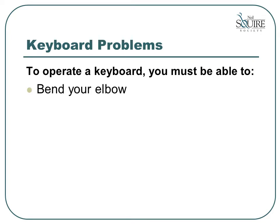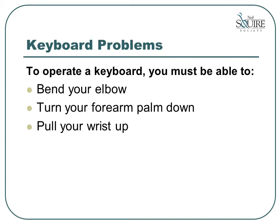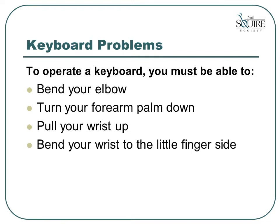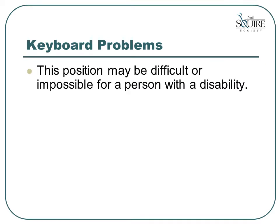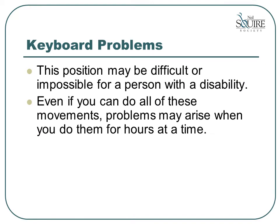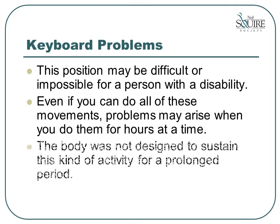First, you must be able to bend your elbow. Then, you must be able to turn your forearm so that your palm is facing down. Next, you must be able to pull up on your wrist. And finally, you must be able to bend your wrist to the little finger side. This position may be difficult or impossible for a person with a disability. Even if you can do all of these movements, problems may arise when you do them for hours at a time.